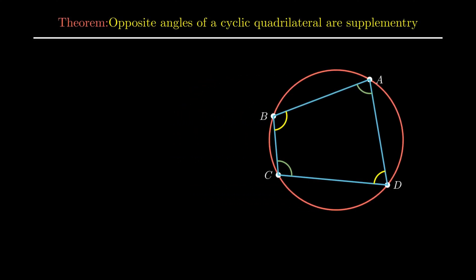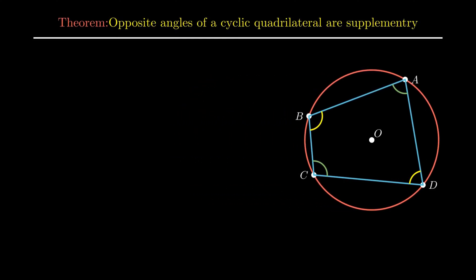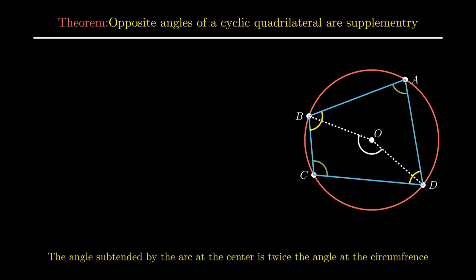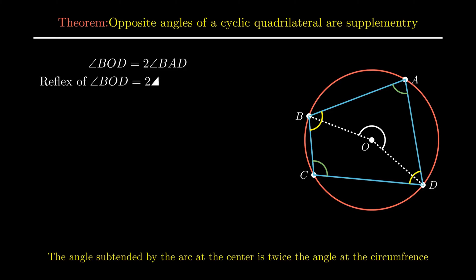To prove this, consider point O as the center of the circle. Join point O to point B and point D, resulting in the formation of angle BOD at the center. As by theorem, the angle subtended by the arc at the center is double the angle subtended by the same arc on the remaining part of the circle, we conclude angle BOD is twice of angle BAD. Now for reflex angle BOD, using the same theorem, we conclude reflex of angle BOD is twice of angle BCD.